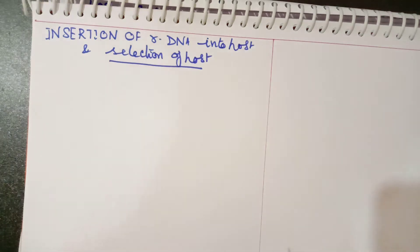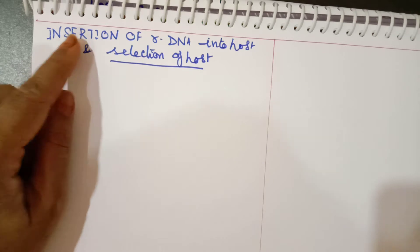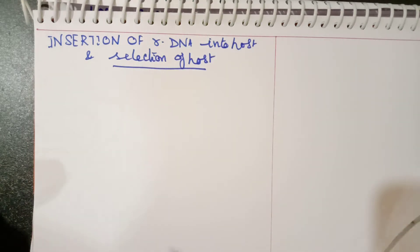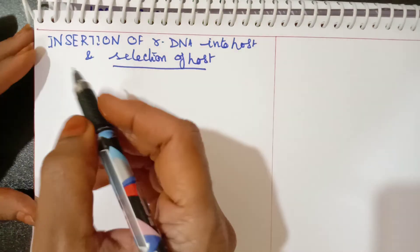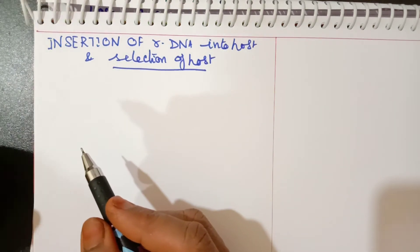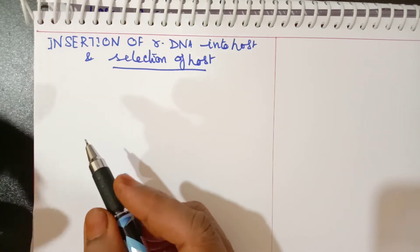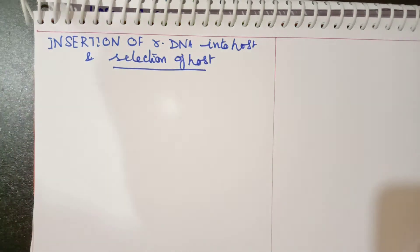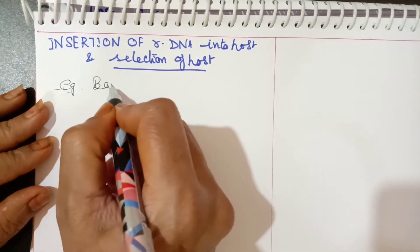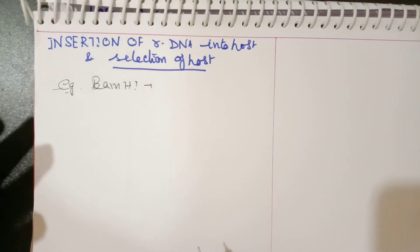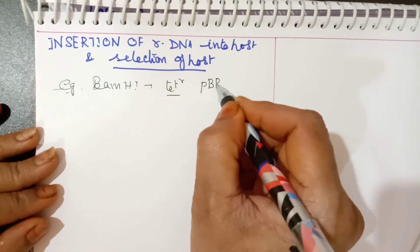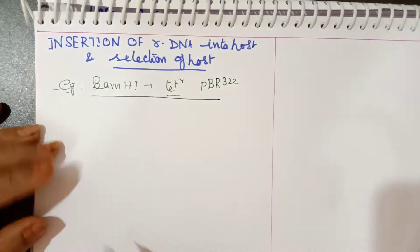We will see how the rDNA can be inserted into the host cell. This is done by taking one particular gene of interest — any foreign gene — which is first inserted into the vector, and then into the host. As an example, we take the restriction enzyme BamHI, which is located in the tetracycline resistant gene of the vector pBR322.